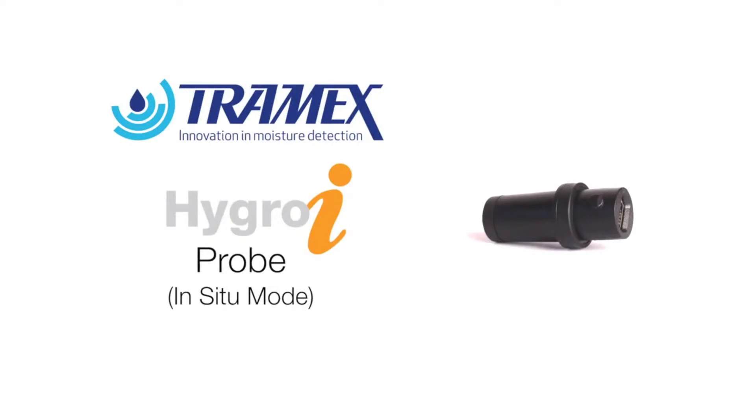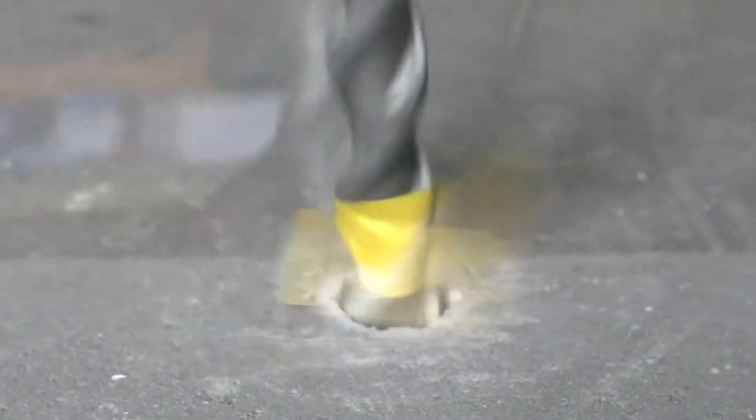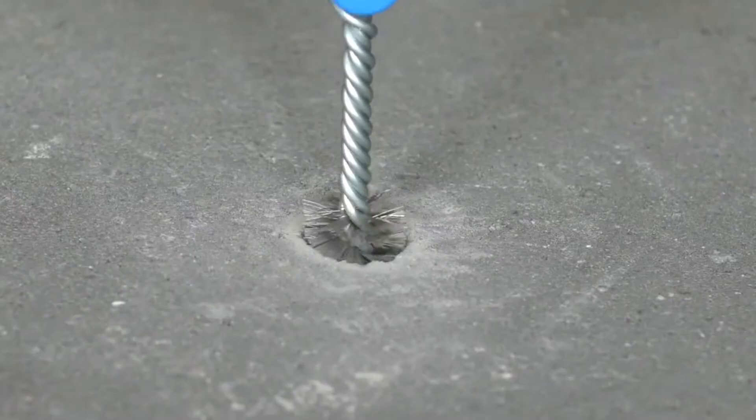The Tramex reusable Hygroi relative humidity probe has been designed specifically for measuring the potential moisture condition of a slab or screed as per ASTM F2170. To perform this in-situ type relative humidity test,